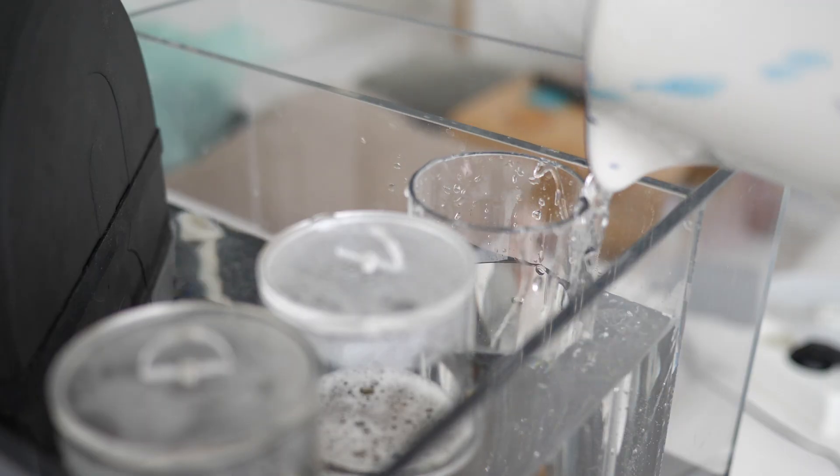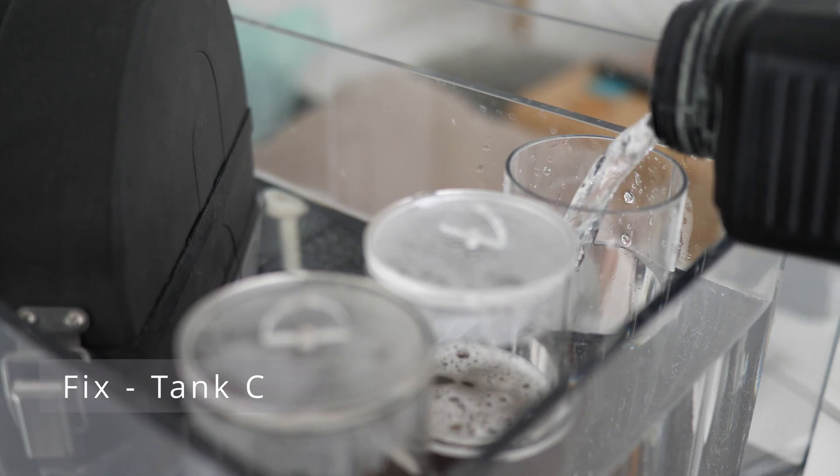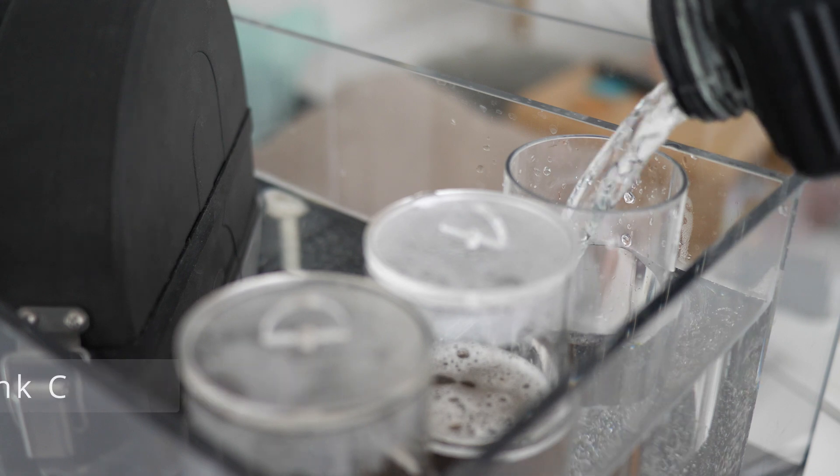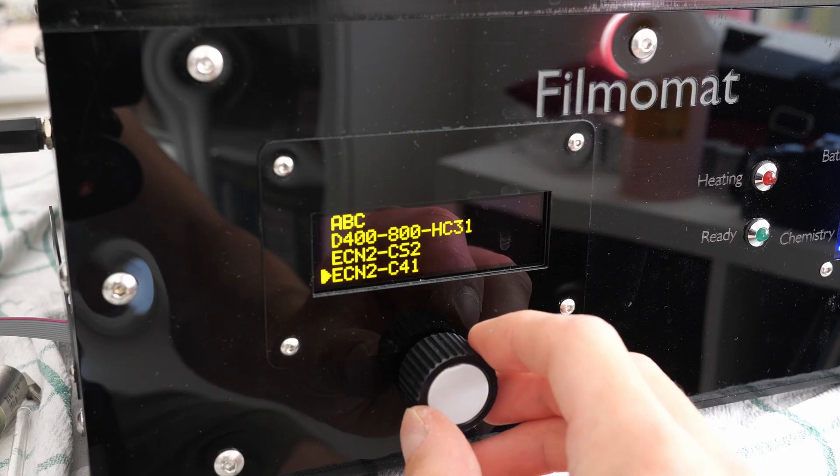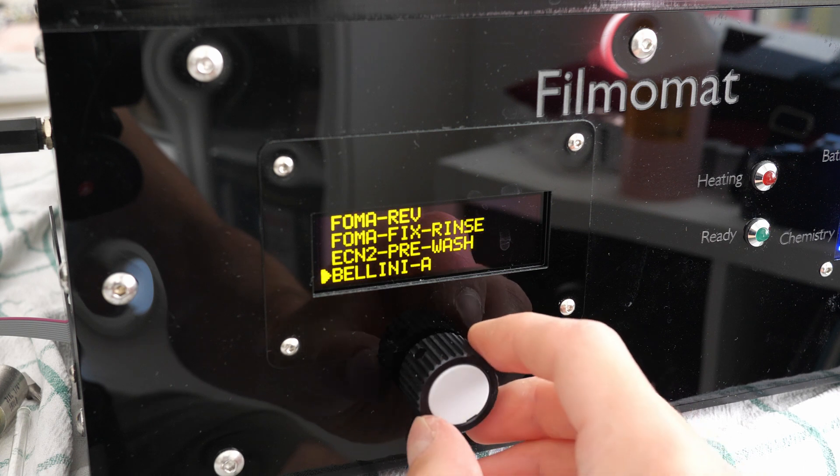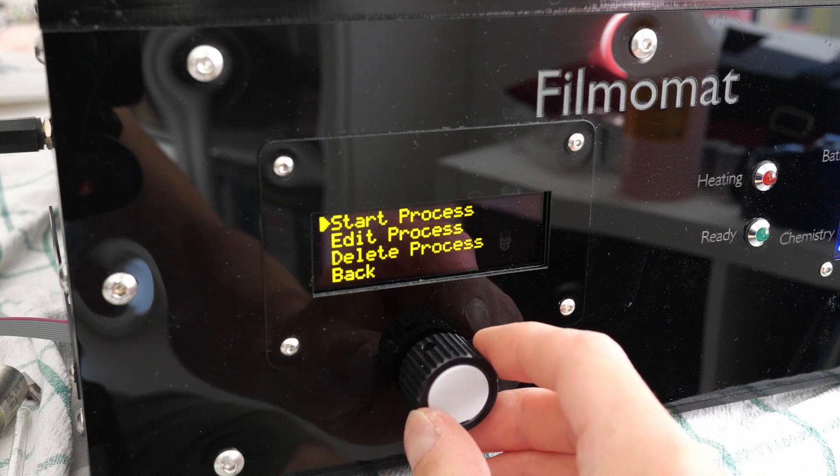We proceed similarly with tank C once the stop bath is over and exchange it with the fixer. At this point, the first part of the process is finished and we manually start the second part.